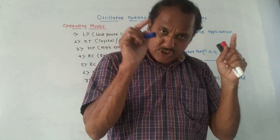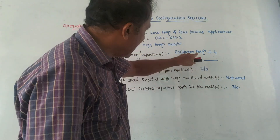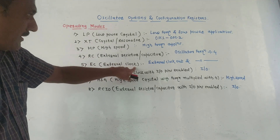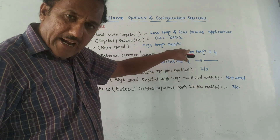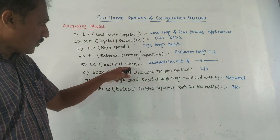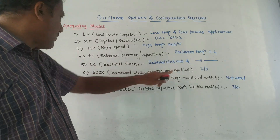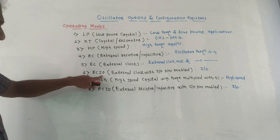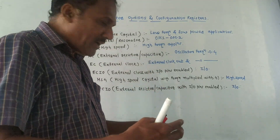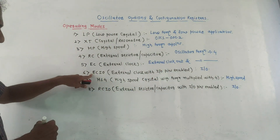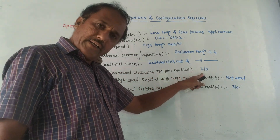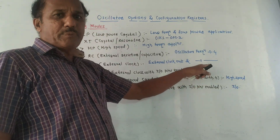Next is EC — external clock. In this case also the oscillator frequency is divided by 4, and you can take out this signal as an external clock out. Then ECIO means external clock with input/output pins enabled. Whenever you are enabling input and output pins, this mode of oscillation is preferred — that is, external clock with input/output pins enabled.